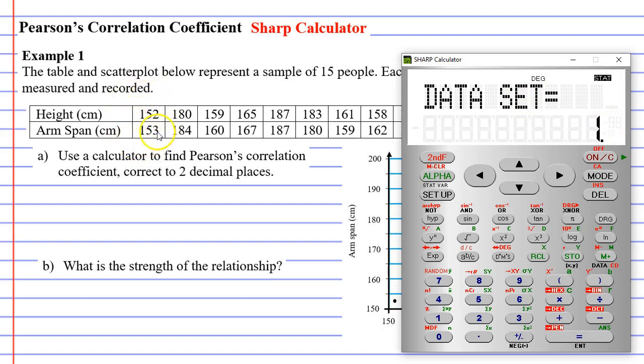If we move on to the next column where we have 180 and 184 we can enter these data values. 180, STO button, 184 and then M+. You will notice that after you have entered the second set of data values that your calculator will say data set equals 2.